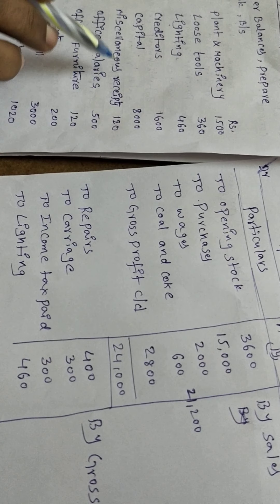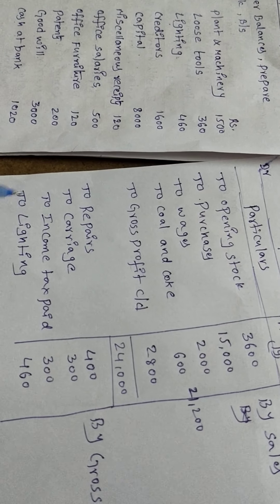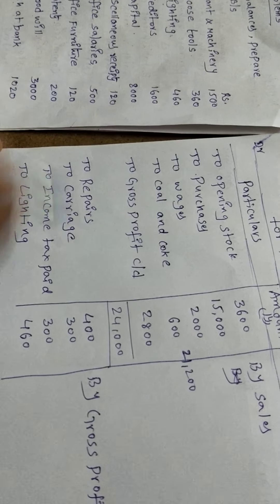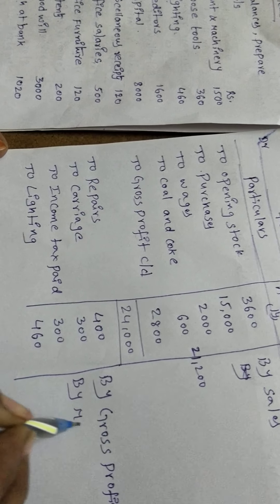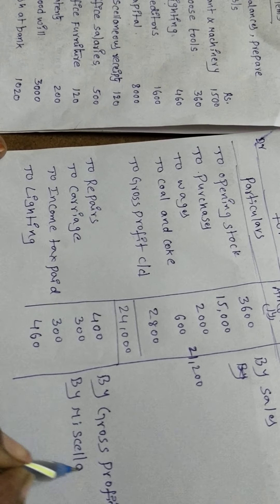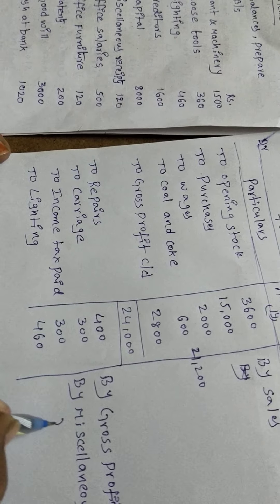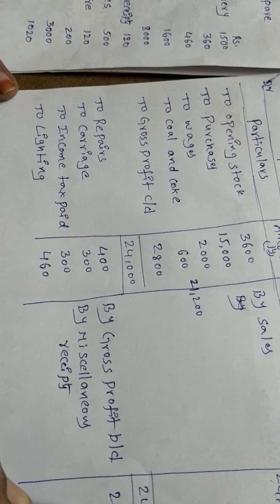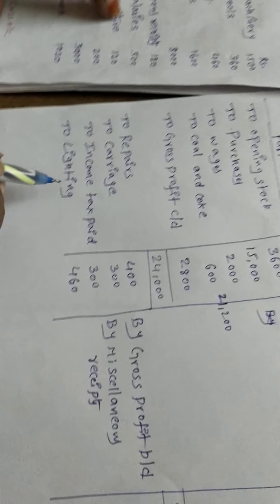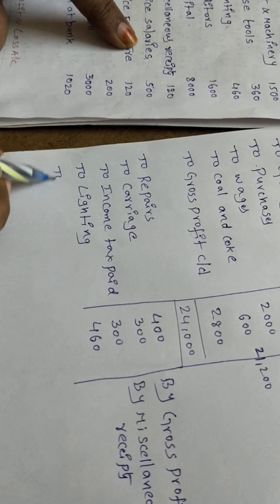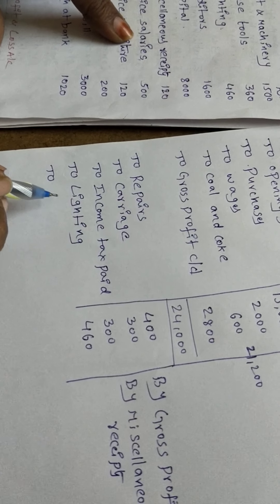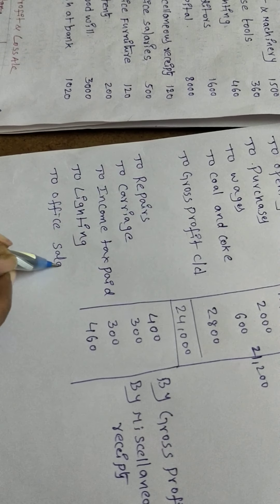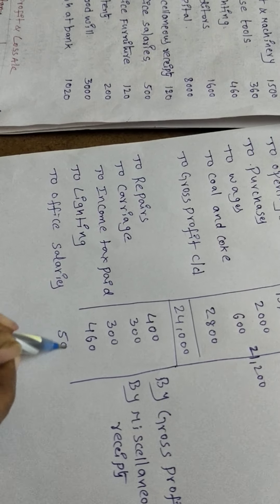Creditors are a liability. Capital is a liability. Miscellaneous receipts are indirect income and go on the credit side of the P&L account — amount 120. Office salaries are indirect expenditure: 'To office salaries' — 500.